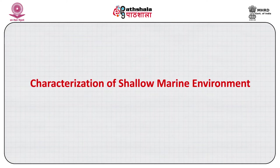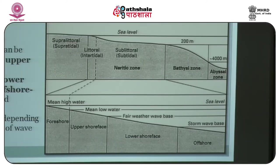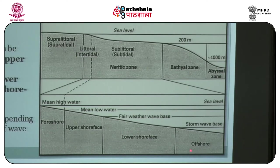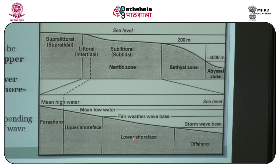Shallow marine realms are divided into three sub-environments depending upon the extent of wave agitation. This zone, up to the shelf break, is enlarged and divided into upper shoreface, lower shoreface, and offshore depending upon the extent of wave agitation. This is based on wave base. Wave base is the extent at which the wave first touches the sea floor, and it varies for fair weather and storm weather. Upper shoreface is characterized as the area between the mean low water and the fair weather wave base. Lower shoreface is between the fair weather and storm weather wave base, and offshore is the area below the storm wave base up to the shelf break.